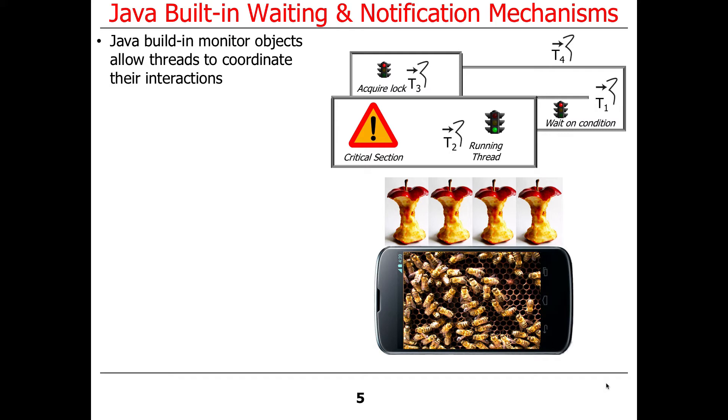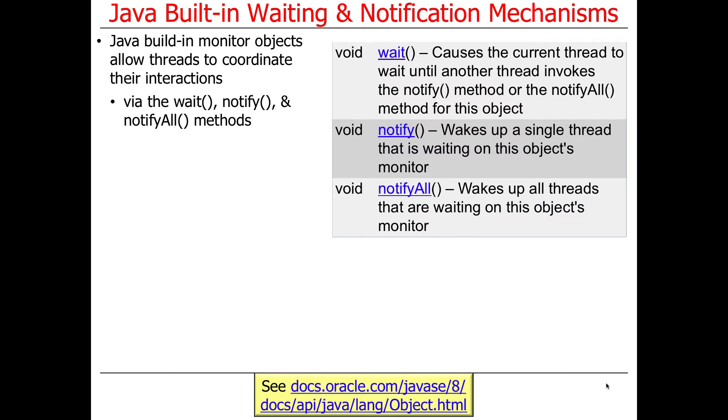Built-in monitor objects also provide this coordination capability, and this is done with the wait, notify, and notify all methods, which, as you may recall, are inherited from Java object. So every reference type, in other words, every non-primitive object in Java, every non-primitive entity, field or variable or whatnot, has these methods defined in it.